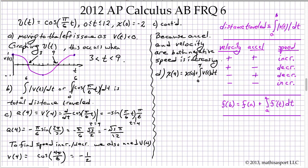So x of 4 equals x of 0 is negative 2 plus the integral 0 to 4, cosine pi over 6 t dt. I'm going to do a u substitution to do this integral. I'm going to say that u equals pi over 6 t, and therefore du dt equals pi over 6, and therefore du equals, or rather dt equals 6 over pi du.